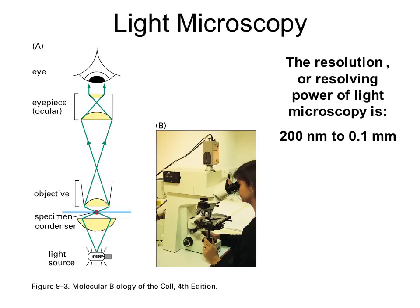The light microscope is one of the most commonly used microscopes in biological research. The resolution, or resolving power, of the light microscope is between 200 nanometers and 0.1 millimeters. Keep in mind: would a light microscope be able to resolve two spheres 300 nanometers apart? Would it resolve two spheres 200 nanometers apart? And would it resolve two spheres 150 nanometers apart? Think about that question for lecture.